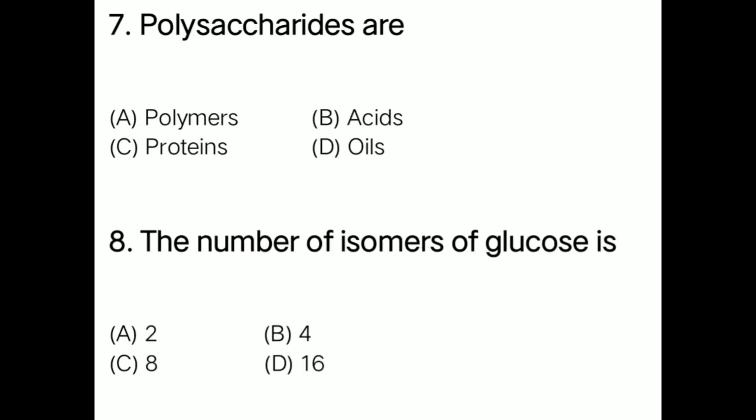Question 5: Polysaccharides are option A polymers, option B acids, option C proteins, option D oils. Correct answer is option A: polymers. Question 8: The number of isomers of glucose is option A 2, option B 4, option C 8, option D 16. Correct answer is option D: 16.